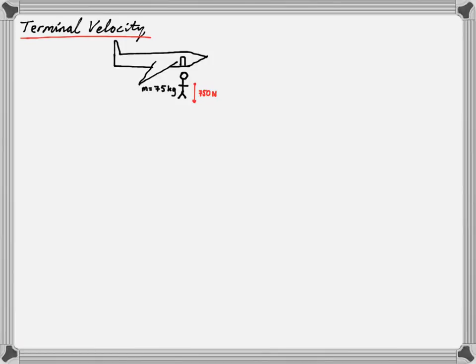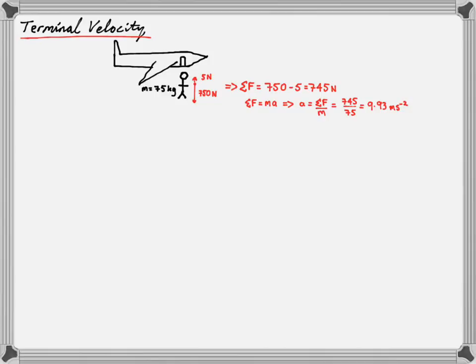Initially when he jumps out of the plane, let's take acceleration due to gravity as 10 m/s². That means his force accelerating him down is going to be equal to his weight, which is 750 newtons. But just as he jumps out there's going to be some air resistance acting against him — 5 newtons at this point. From Newton's second law, the net force is 750 down minus 5 up, giving us 745 newtons. Therefore acceleration equals net force over mass: 745 ÷ 75 = 9.93 m/s².